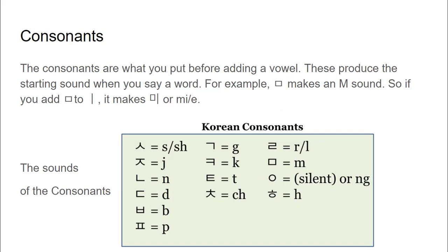The consonants. The consonants are what you put before adding a vowel. These consonants create the starting sound when you say a word. For example, that makes the N sound. So if you add N to E, it makes an N sound.